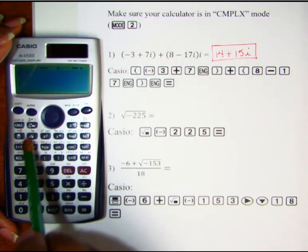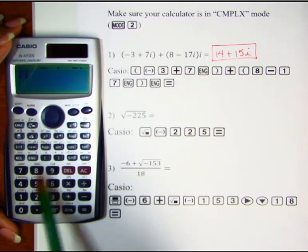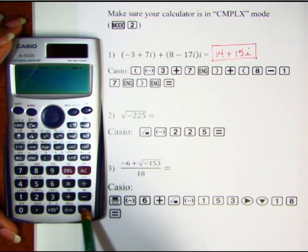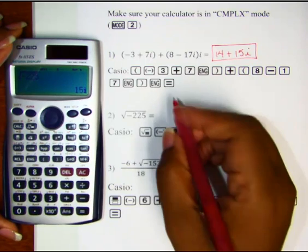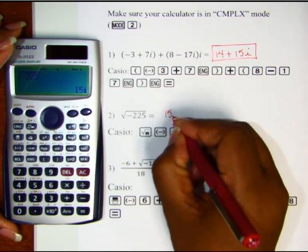So let's hit the square root, negative 225, hit equals, and we get 15i.